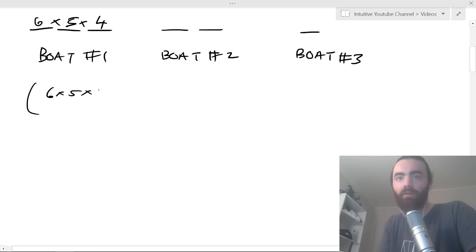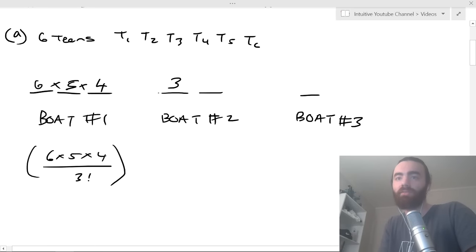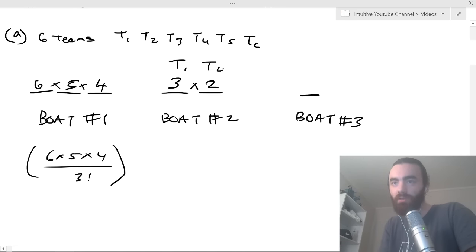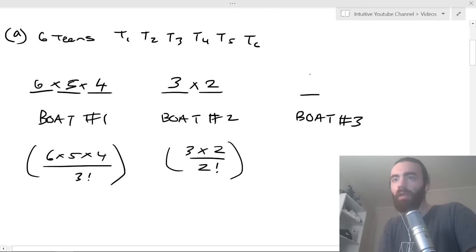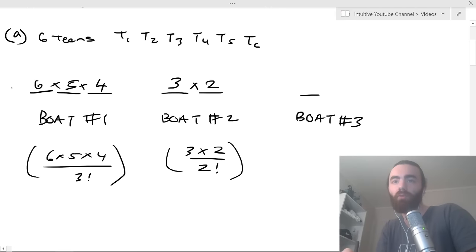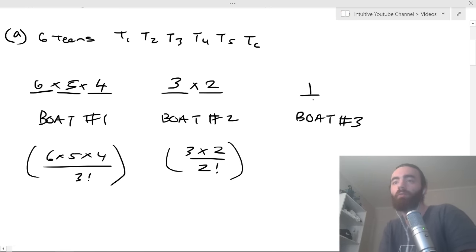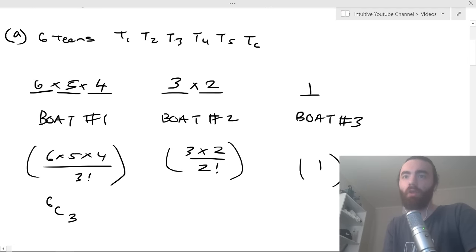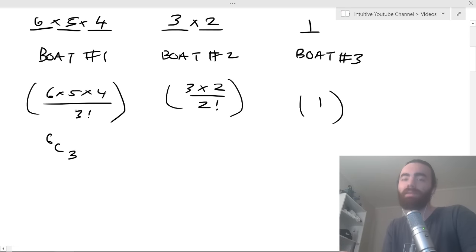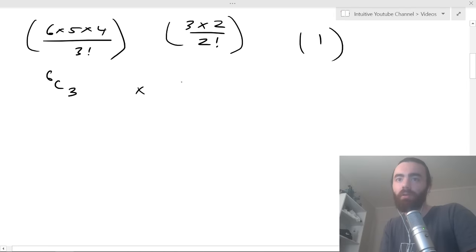For boat one: six times five times four divided by three factorial. For boat two, we've only got three teenagers left: three times two, but again divide by two factorial to avoid over-counting T2, T1 vs T1, T2. For the last boat there's only one teenager left and one slot, so there's just one way. This is the same as writing 6C3 times 3C2 times 1C1, but I just like doing it this way.